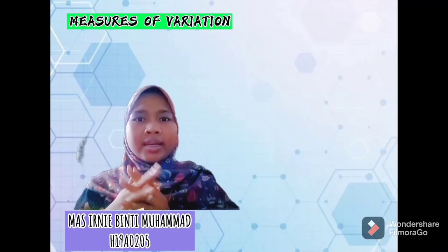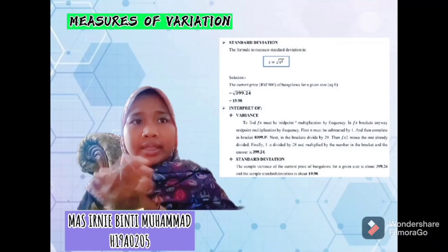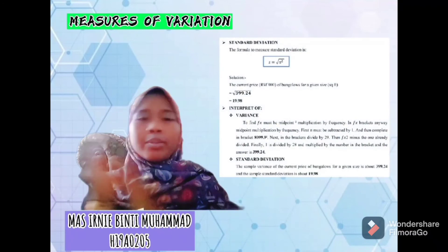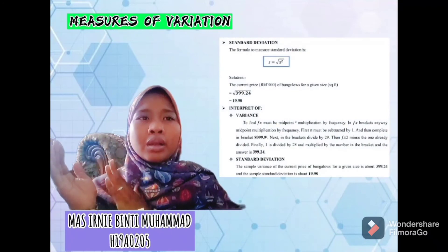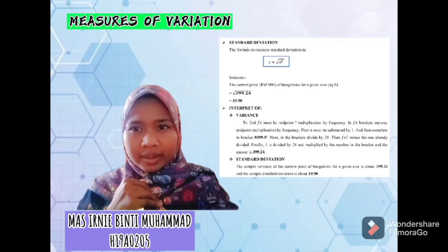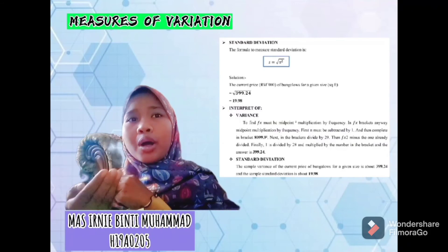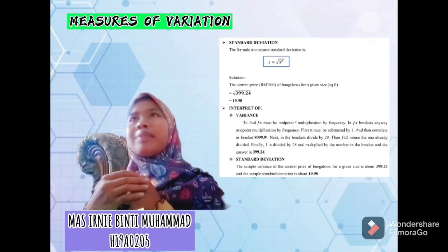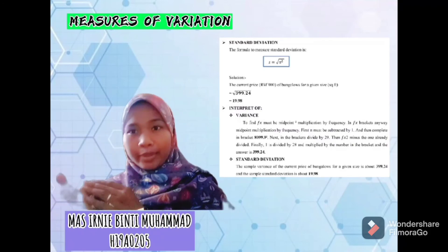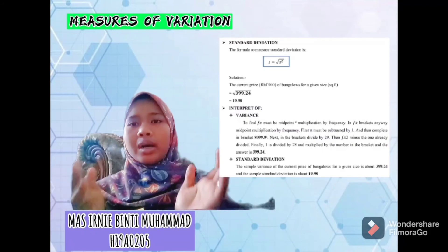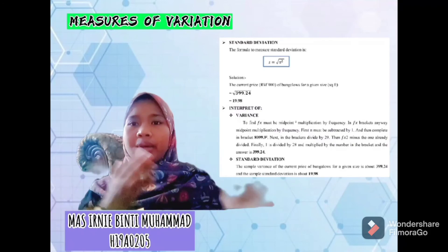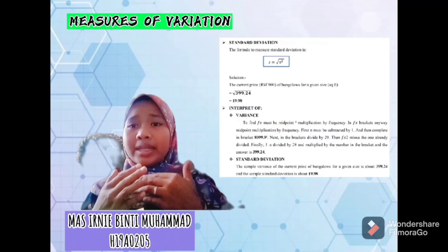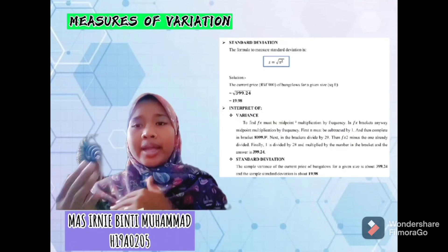Lastly, about the standard deviation. The sample variance of the current price of bungalows for a given size is about 399.24, and the sample standard deviation is about 19.98.